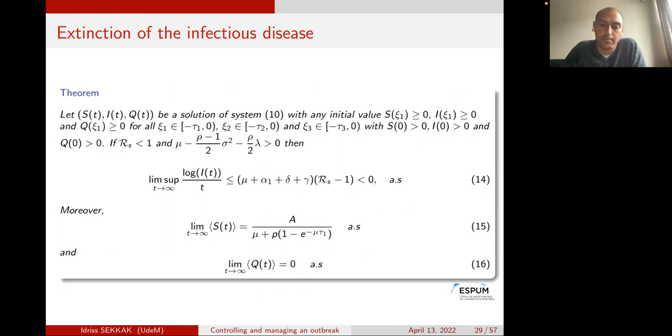For persistence in mean: if R_S > 1, then lim inf_{t→∞} (1/t)∫I ds > 0, and we have corresponding results for both compartments S and Q.